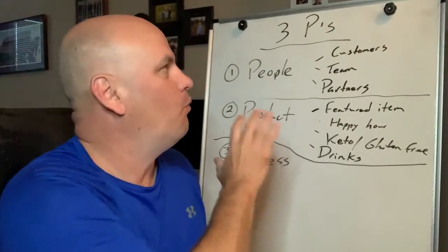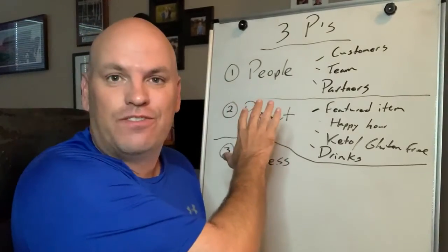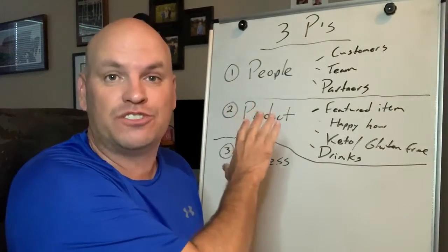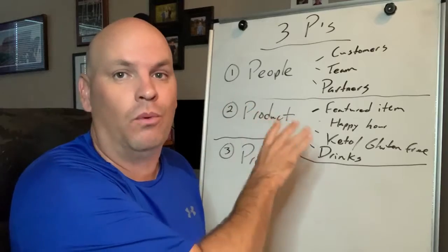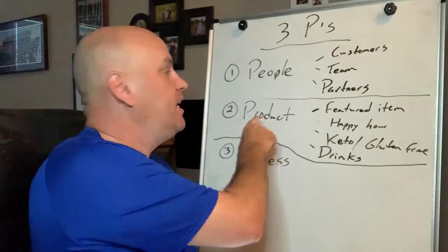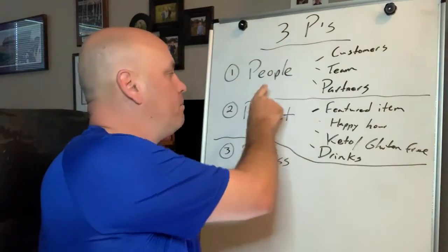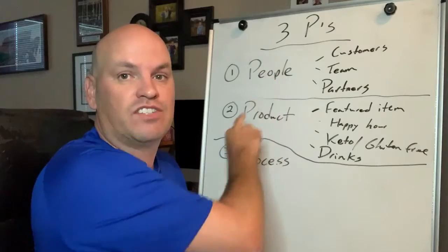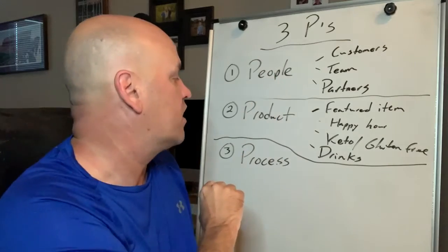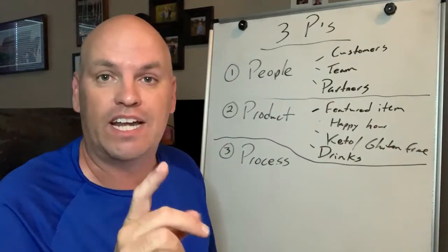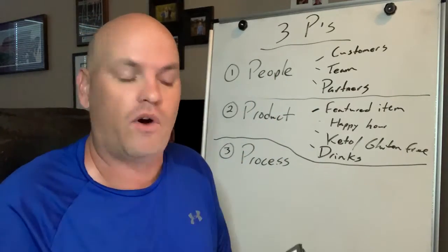Hey again, it's Court. So this is day three of what to post for your restaurant when you don't know what to post. I always turn to the three P's, which are people, product, and process. In the last couple of days, we've talked about these first two. Today, I want to hit on process.